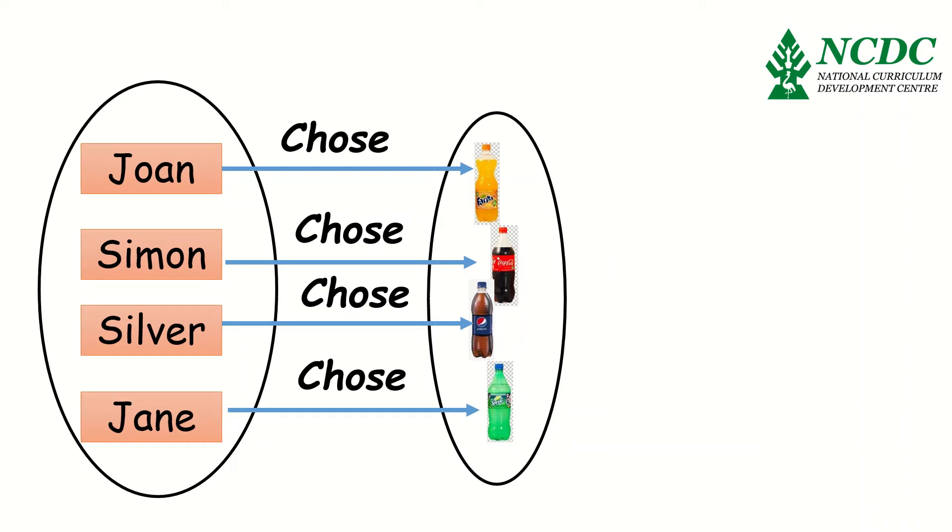Now, let's look at it this way. We can have Joan, Simon, Silva, and Jane put into one set and then the drinks in another set. And because of that, we are going to use one statement to link the set of the party goers and the drinks without repetition. Such that, I'll get something like this.